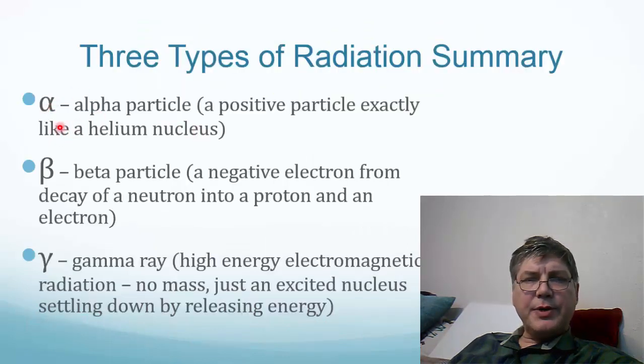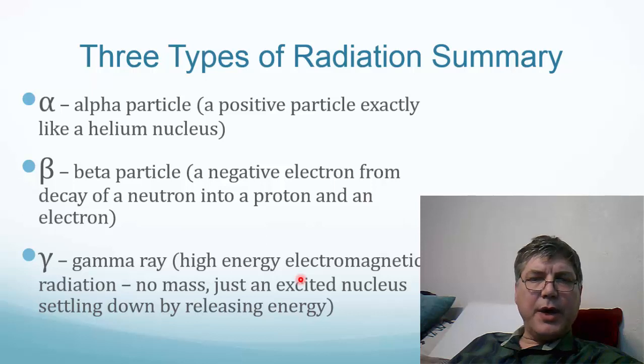So, here's a summary of the three types. Alpha particles, a positively charged particle like a helium nucleus. A beta particle is an electron that is caused by the decay of a neutron into a proton and an electron and a gamma ray which is a high energy electromagnetic ray. It has no mass and it's the result of an excited nucleus settling down by releasing some energy.